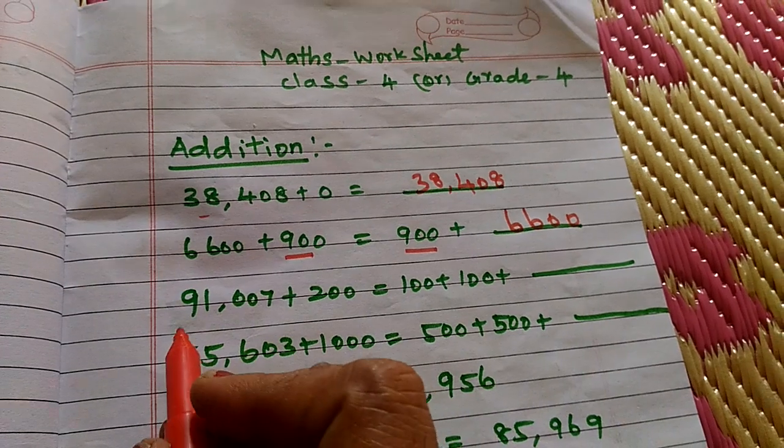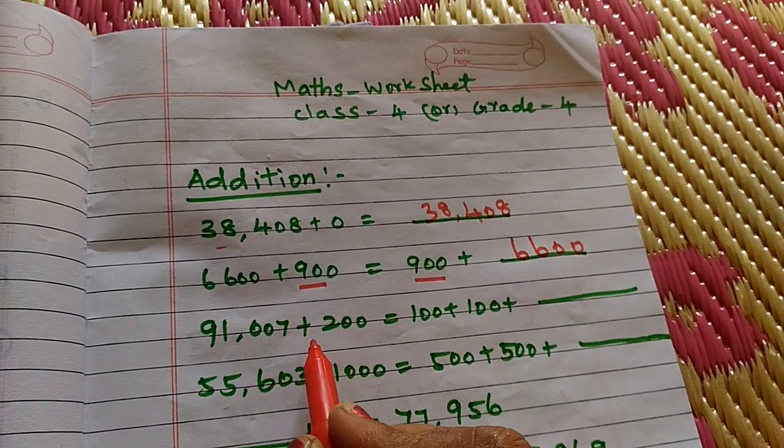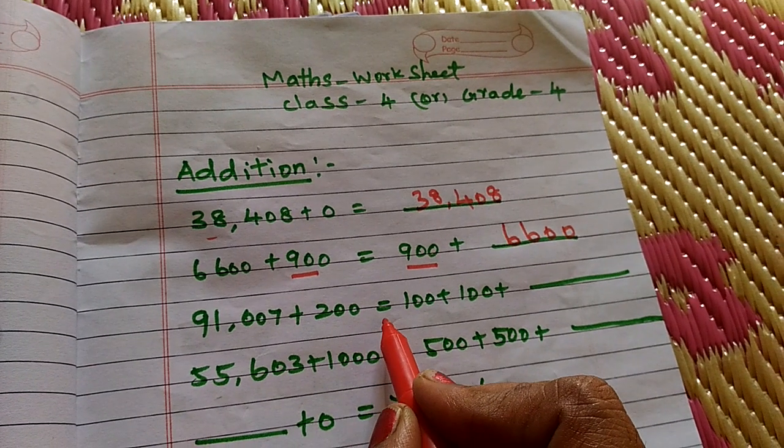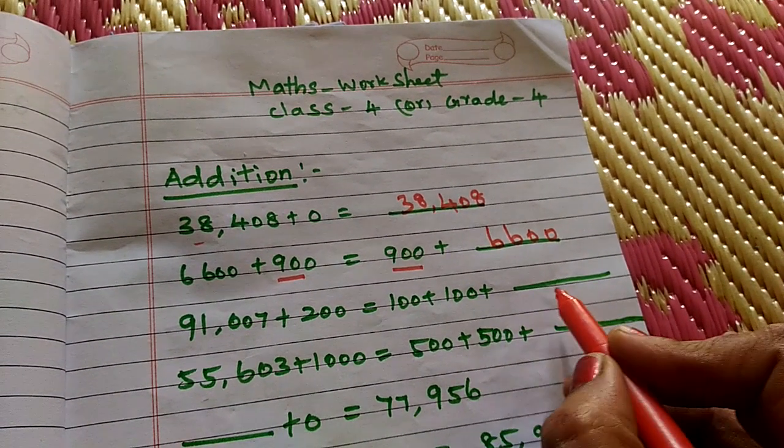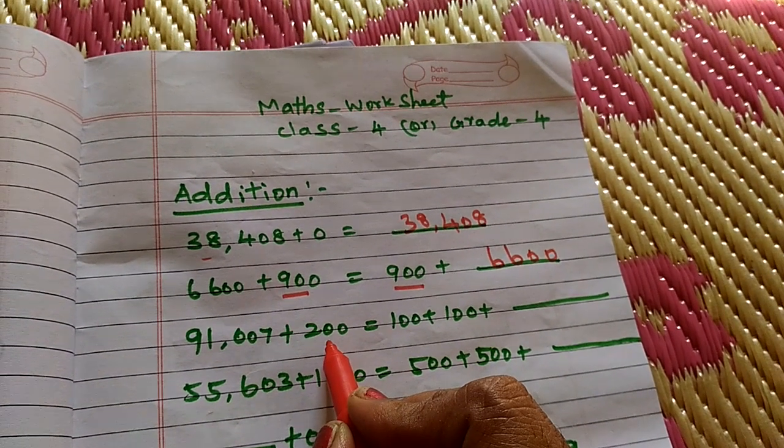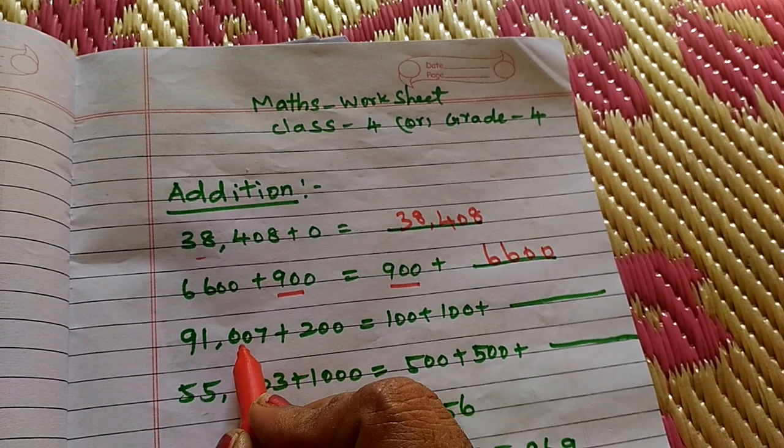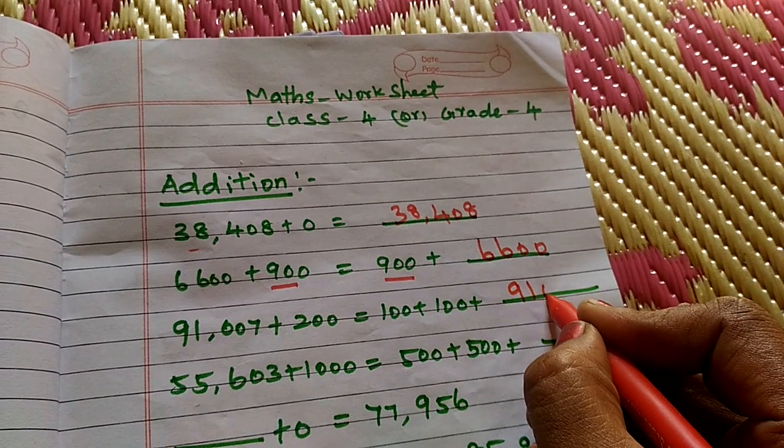One more example. 91,607 plus 200 equals 100 plus 100 dash. 100 plus 100 is 200. Here. Then, 91,607. You write here, 91,607.